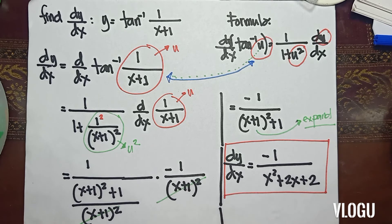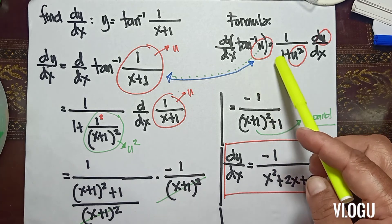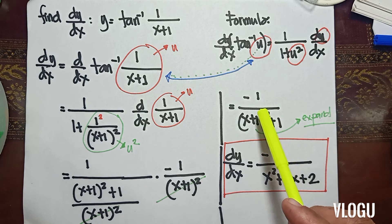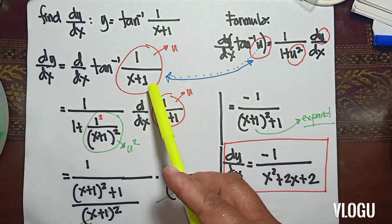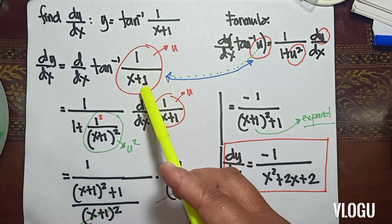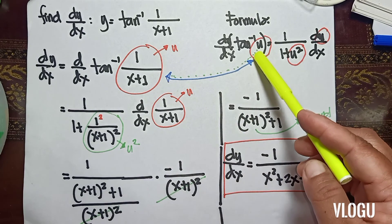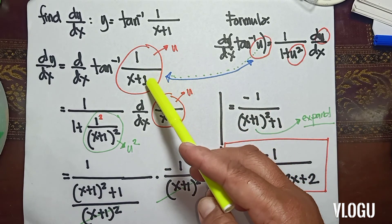The next example: y is equal to tangent inverse of 1 over (x plus 1). We are going to find the derivative of tangent inverse. From the formula, tangent inverse u is equal to 1 over 1 plus u squared times du/dx. Our u in our example is 1 over (x plus 1).